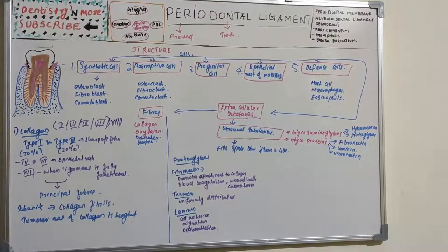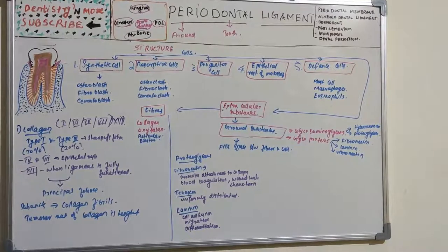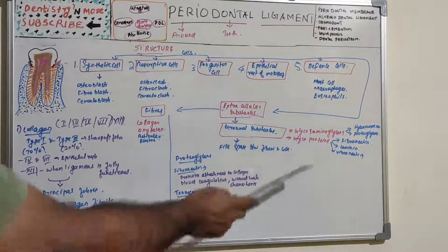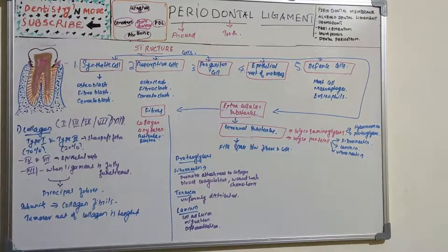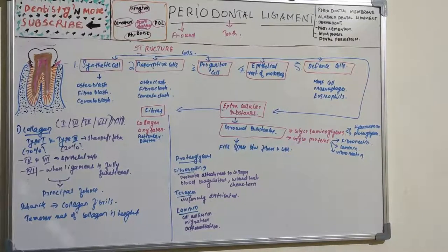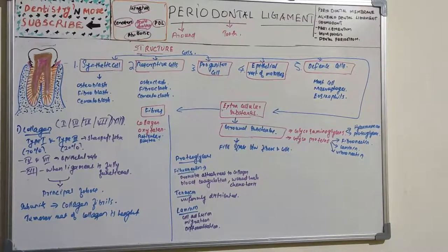Now moving on to ground substances. The major glycosaminoglycans are chondroitin sulfate, dermatan sulfate, heparin sulfate, hyaluronic acid, and keratan sulfate. For glycoproteins: fibronectin is the most common. It promotes attachment of cells to substratum, especially to collagen, and is expressed strongly along attachment sites of PDL collagen fibers to cementum but not bone. Additional functions include blood coagulation, wound healing, and chemotaxis.